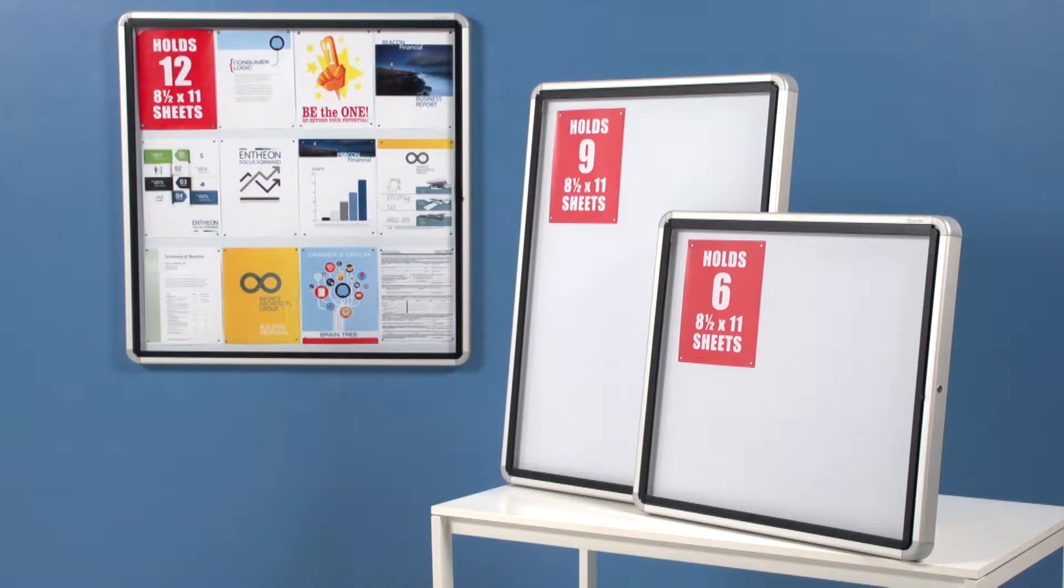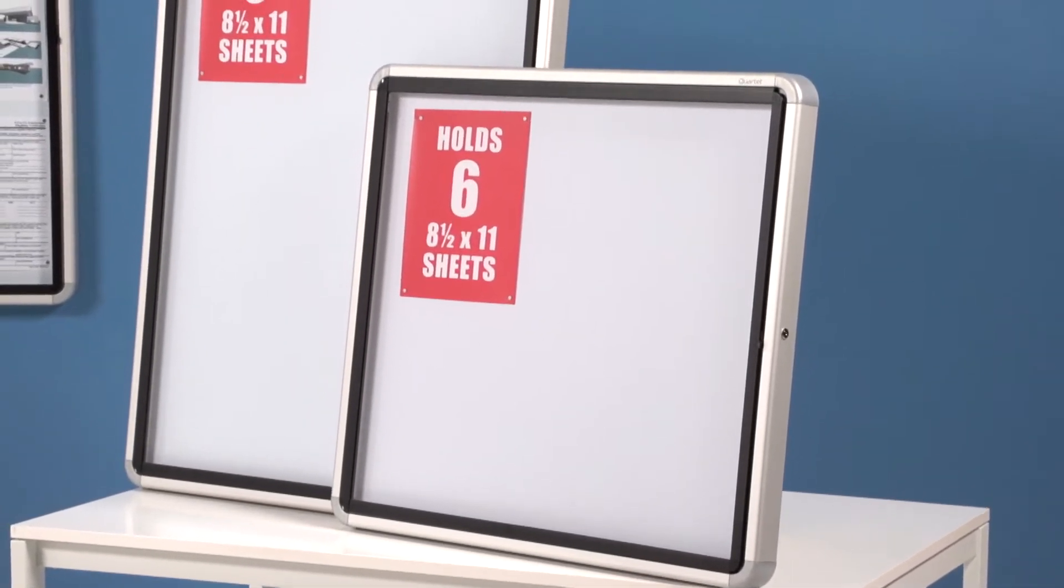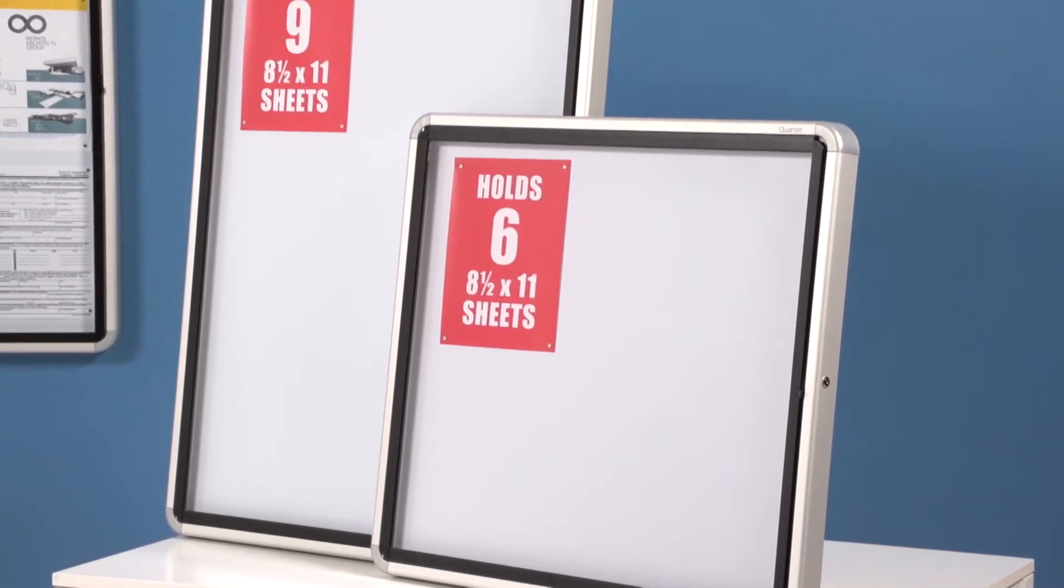The boards are available in three sizes. The 30 by 27 inch enclosed board will hold up to a 27 by 25 inch sign, or six letter size documents.